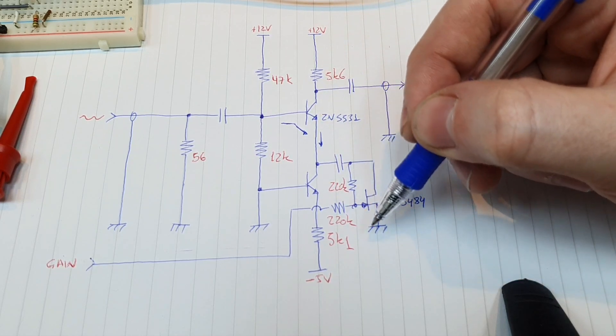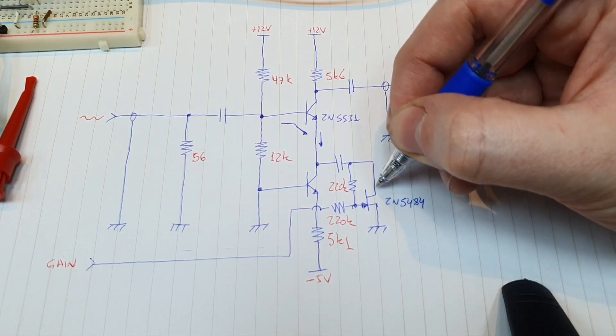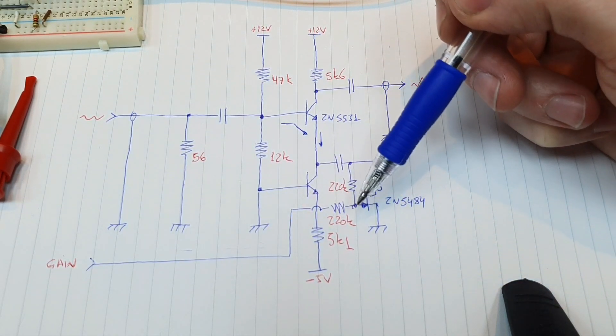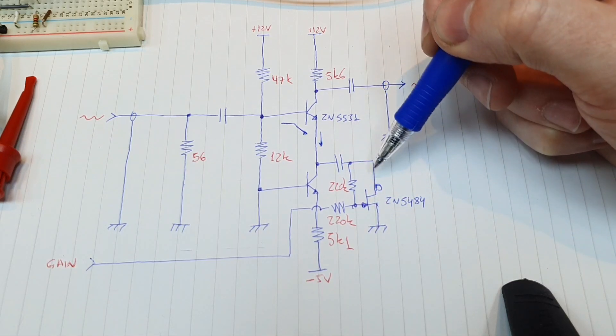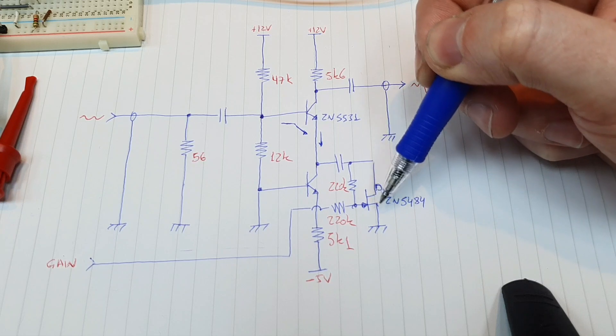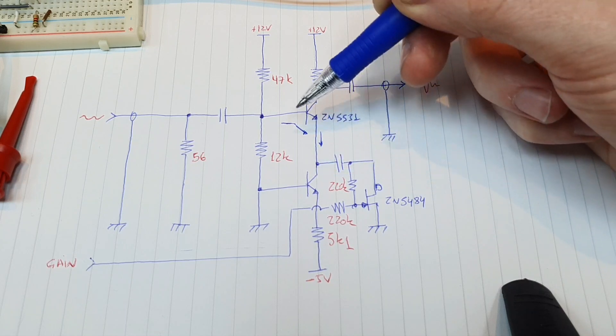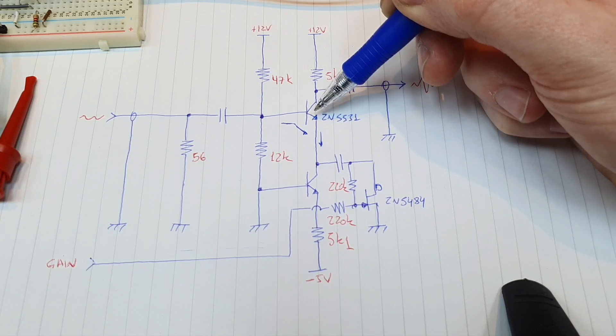So we are using a JFET transistor AC coupled here in the drain and changing the gate voltage of the JFET will change the resistance of the channel and this channel resistance is the AC resistance seen by this signal on the input of the amplifier transistor.